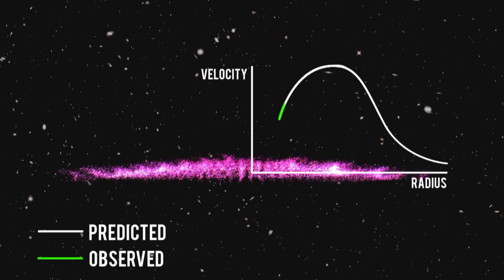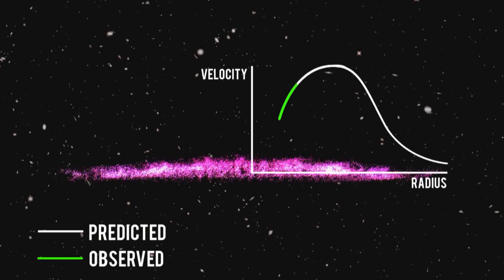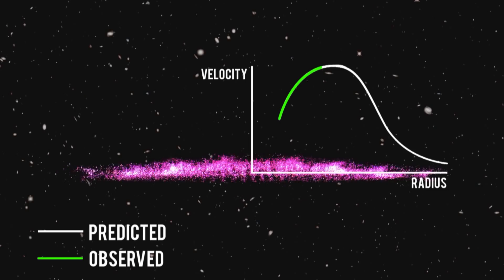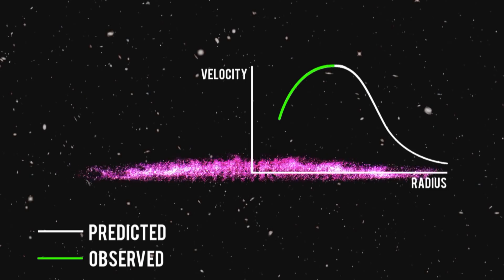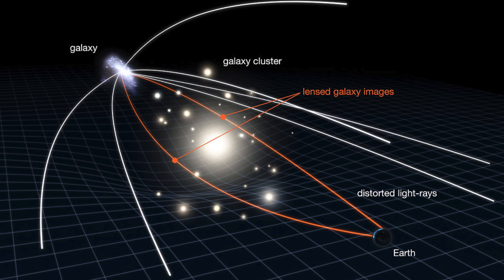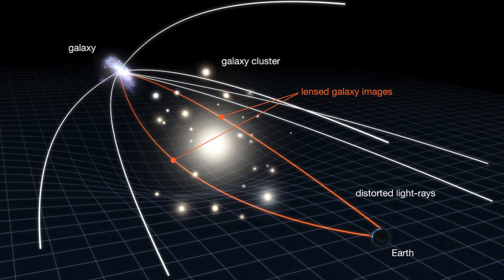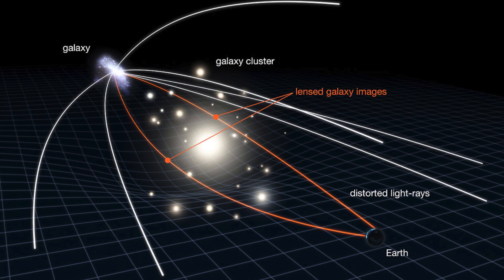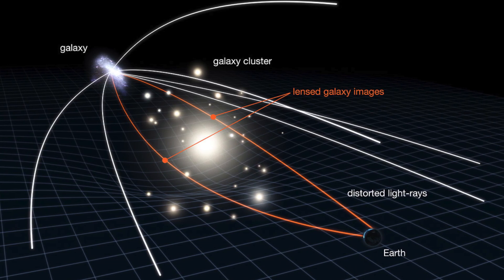From the 1930s, astronomers saw galaxies both spin and move through space more quickly than expected. They saw images of distant galaxies more distorted than they could explain. Truth be told, it's a bit of a mess. Even today, we still don't definitively know the explanation.